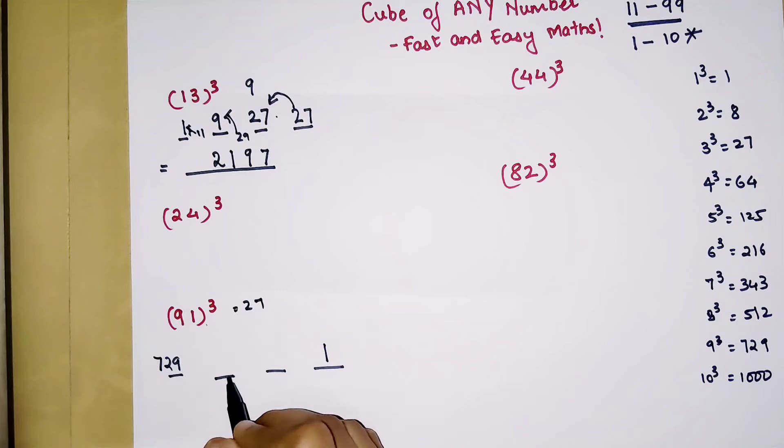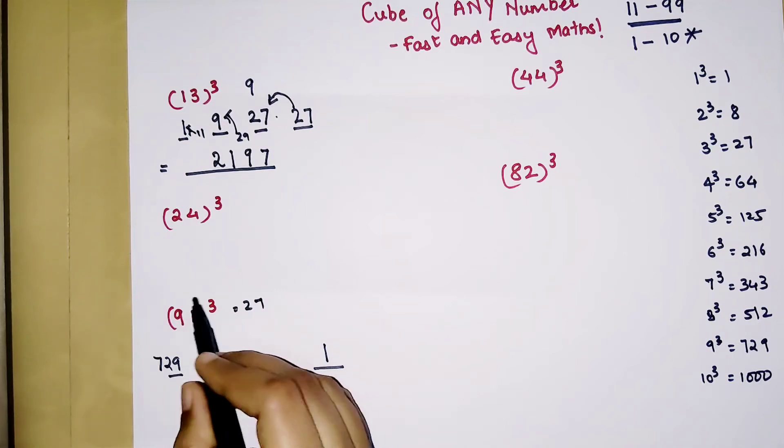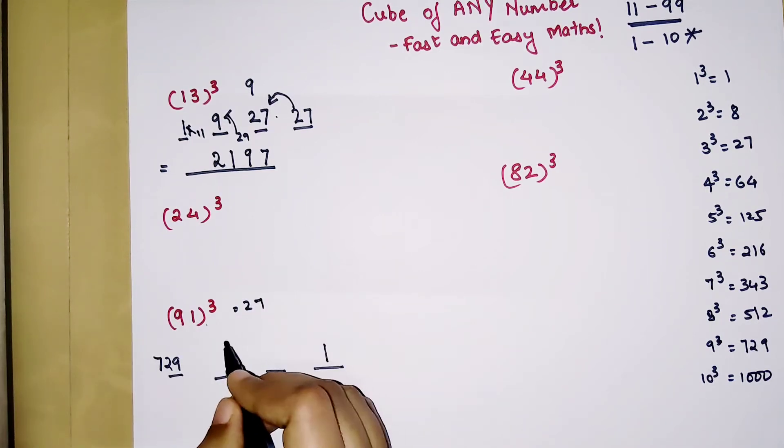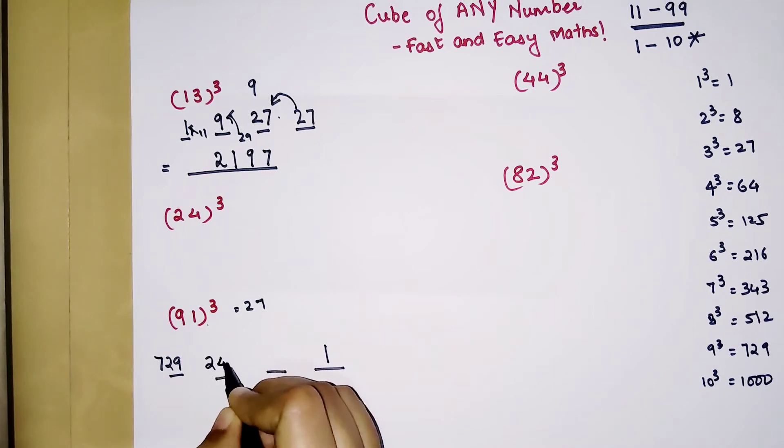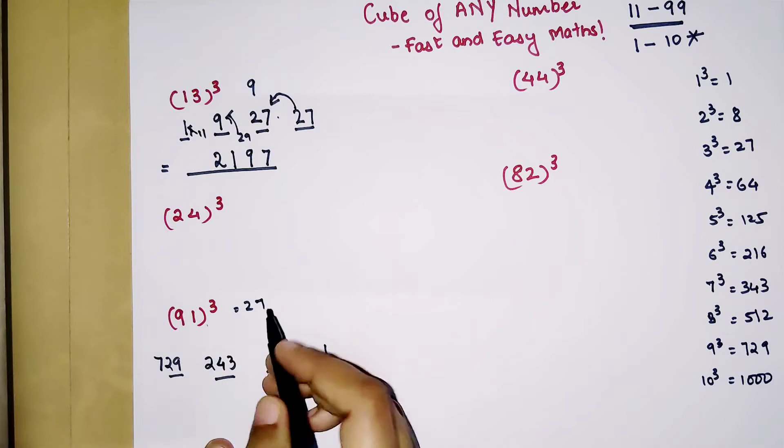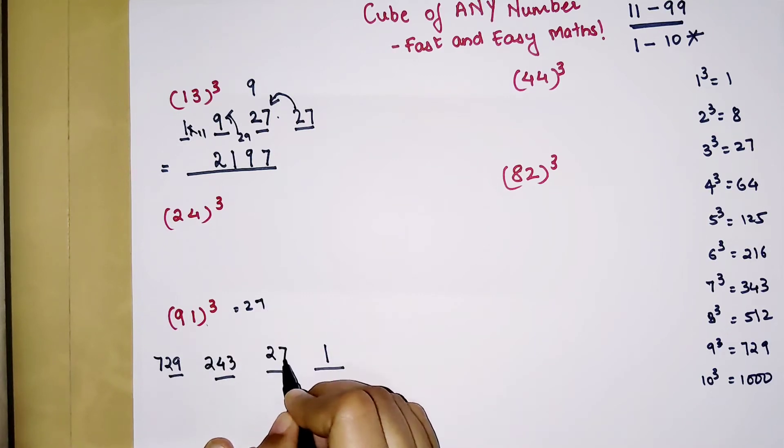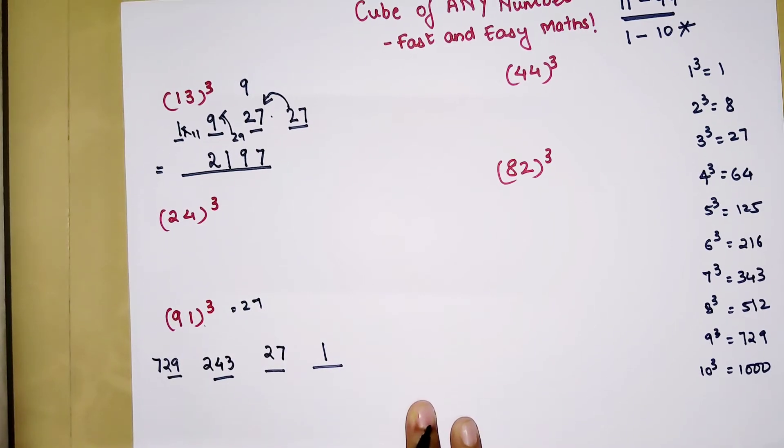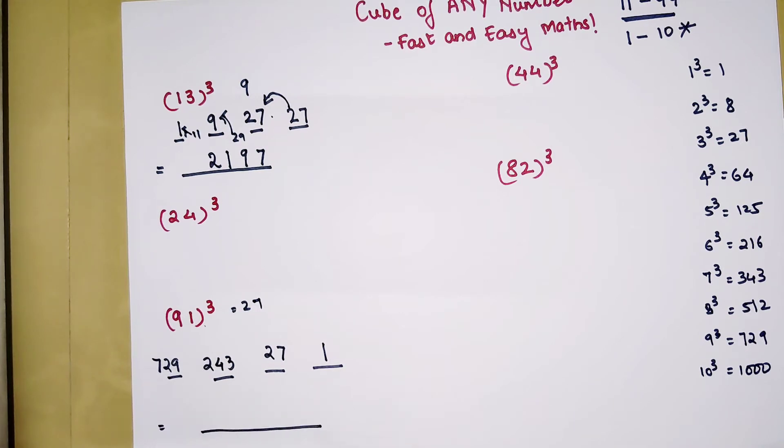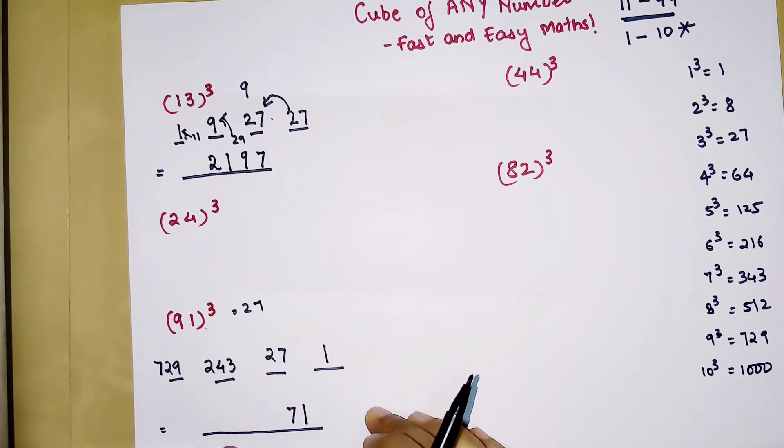Now for this part you will be multiplying 27 with the first digit. So 27 multiplied by 9 gets you 243. And then 27 gets multiplied by 1 which is going to get you just 27.